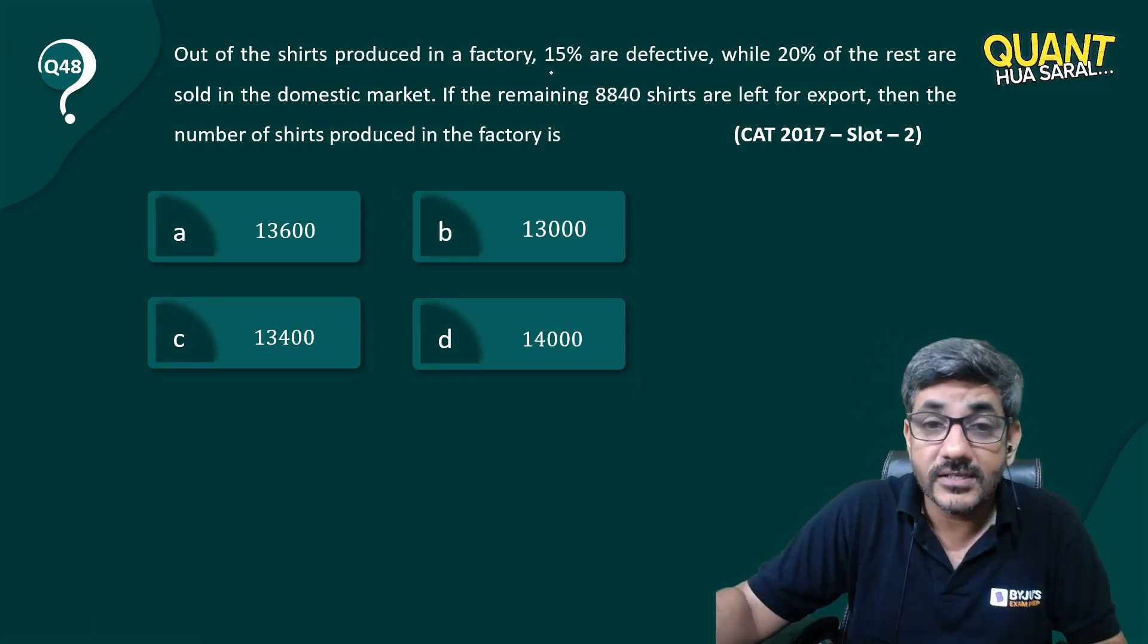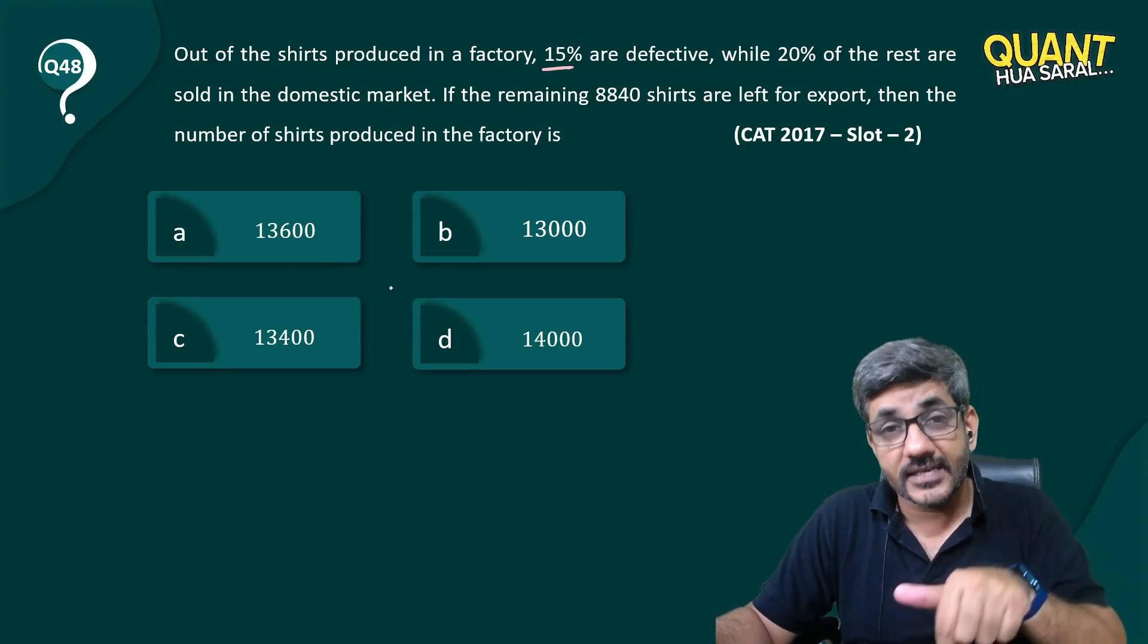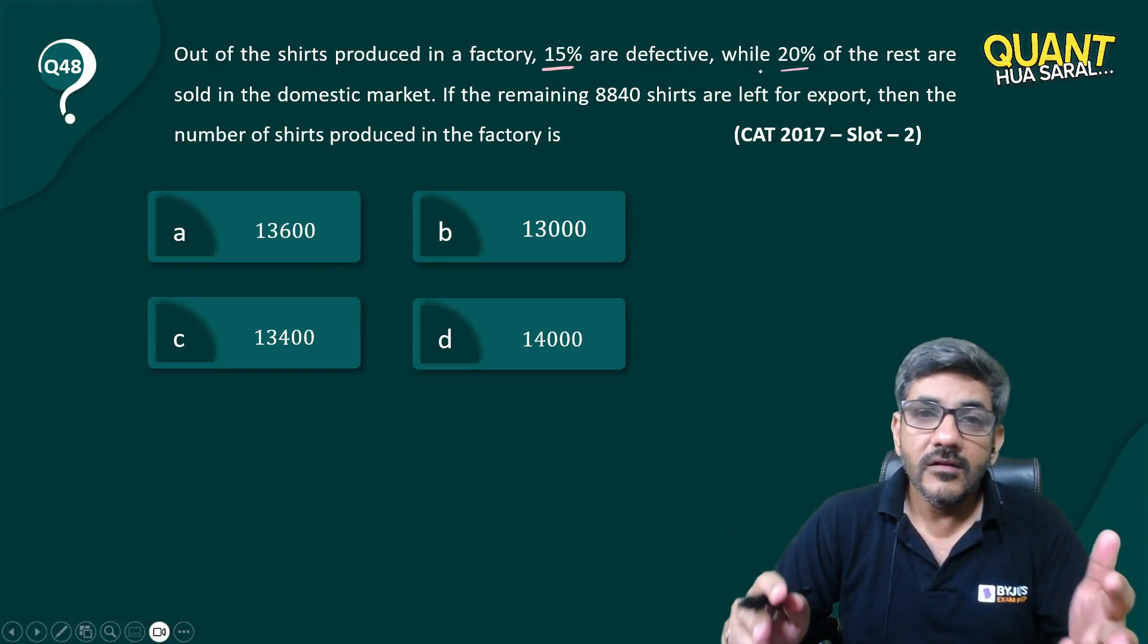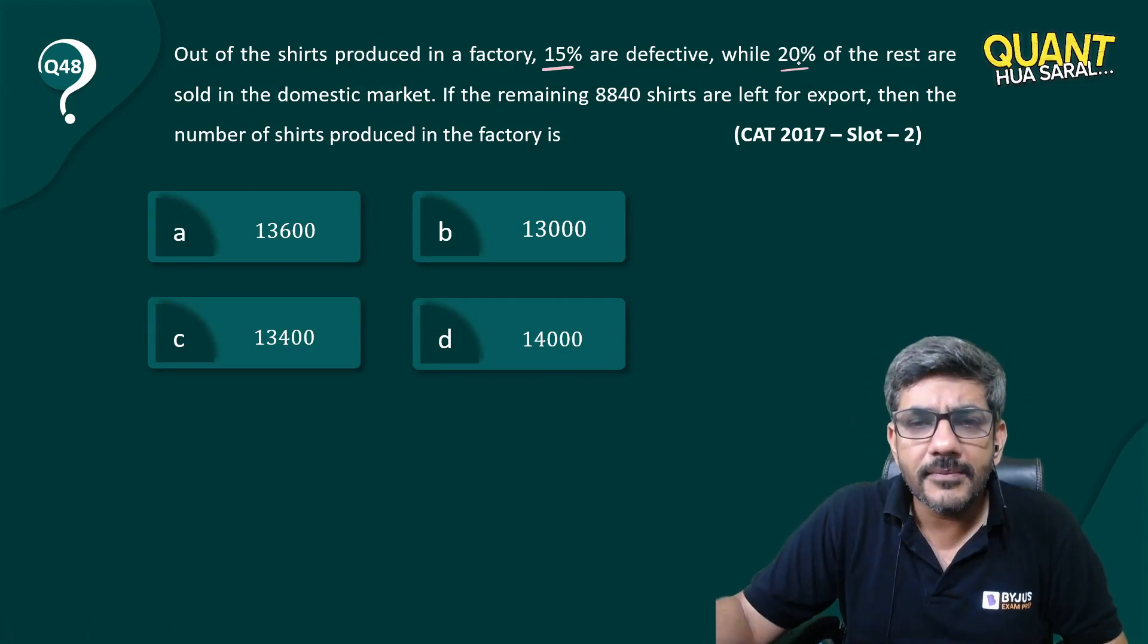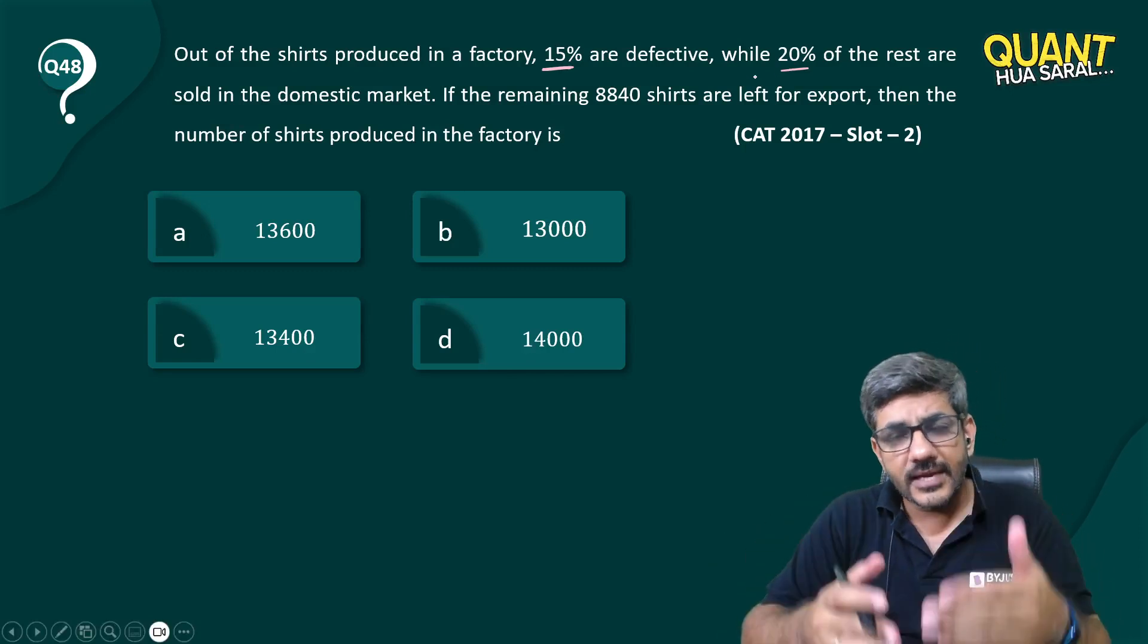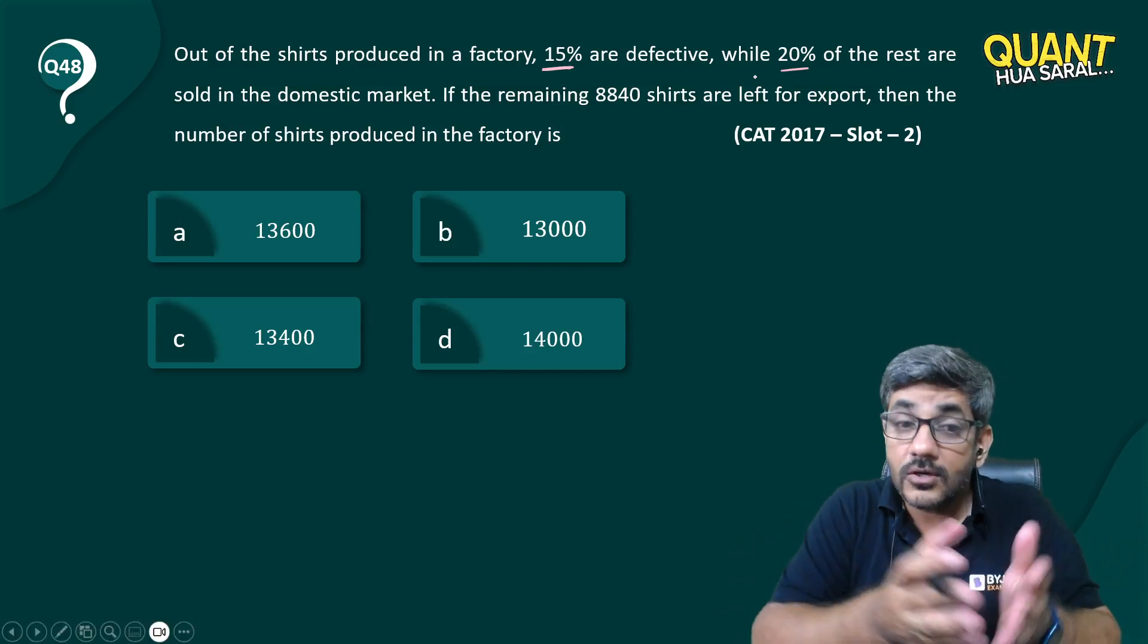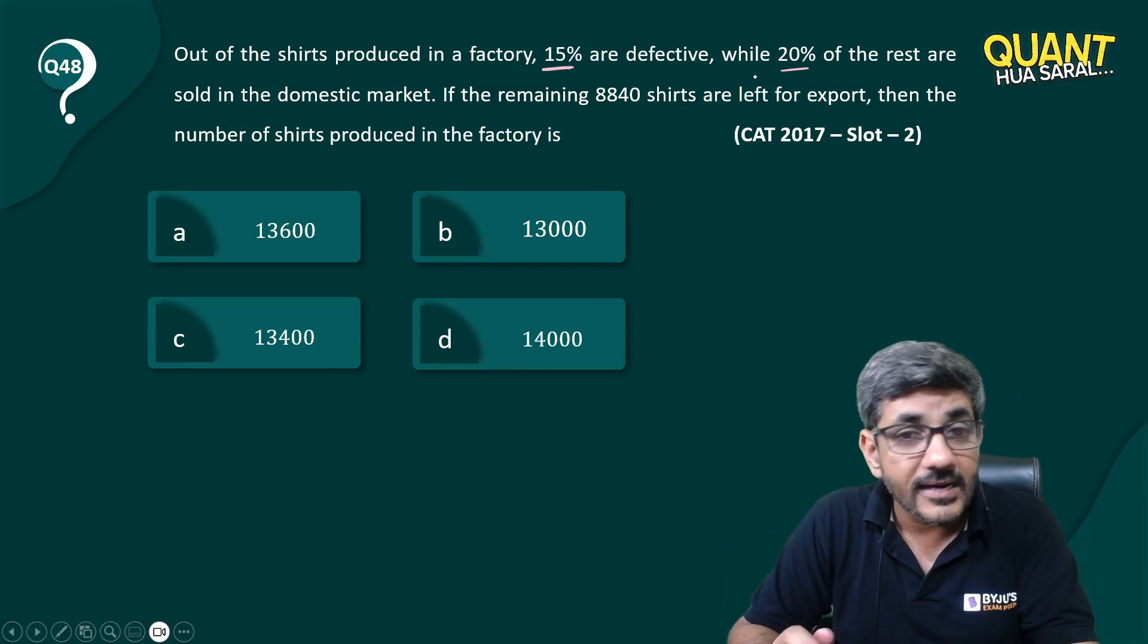I would have told about these questions before as well that you just see what is the number whose 15% can be taken and after taking 15% even 20% can be taken. 15% means 15 by 100 that is equal to 3 by 20, 20% means 1 by 5. Now 3 by 20 and 1 by 5 means the number should be a multiple of 100, but all of them are a multiple of 100 so here probably I cannot work with that.